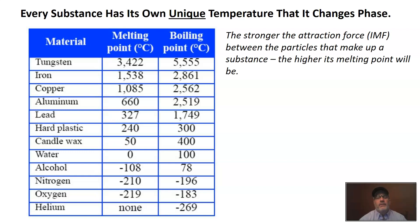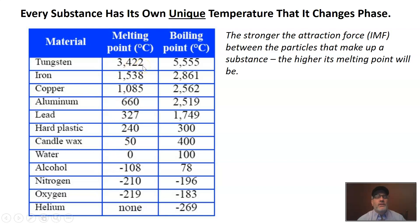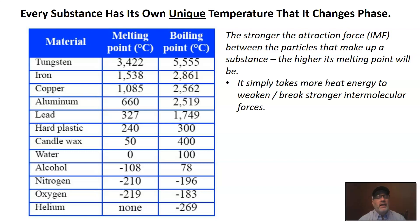These different temperatures for melting and boiling come back to IMF — intermolecular forces. The stronger the force between the particles that make up a substance, the higher that temperature is going to be. Tungsten doesn't melt until over 3,400 degrees Celsius, which means the atoms in tungsten are really attracted to each other and it takes a lot of heat energy to weaken those bonds. So melting point also reflects the strength of the intermolecular force.